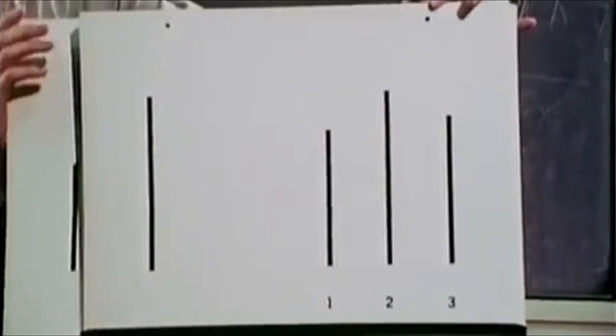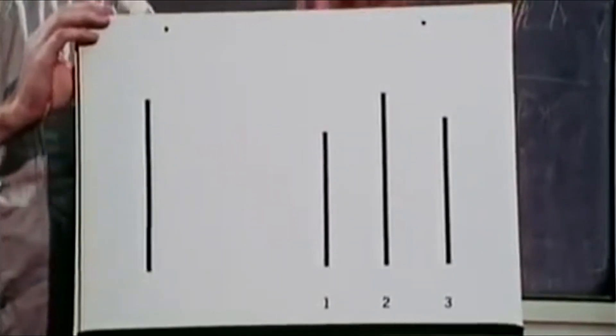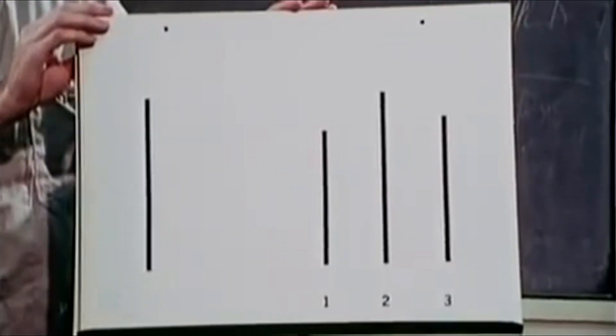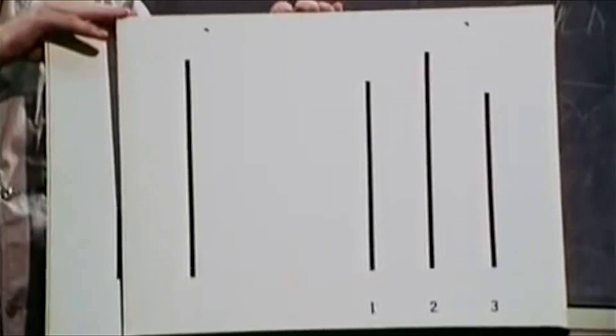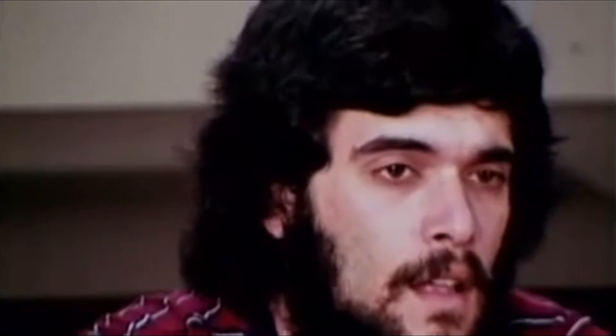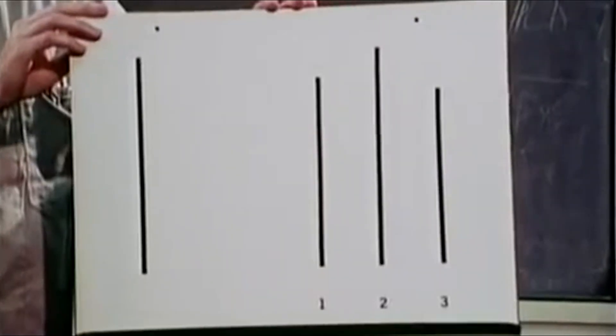In the first test, the correct answer is two. The actors answer one, one, one — and the volunteer answers two. Once again, the correct answer is two, but the actors respond three, three, three — and the volunteer answers three, going along with the group.